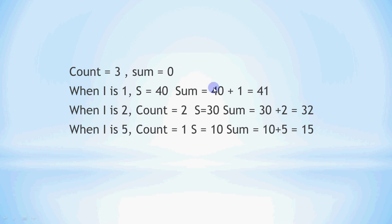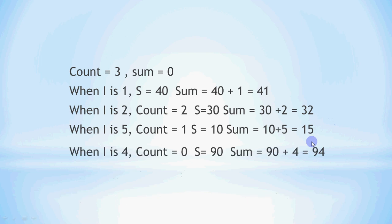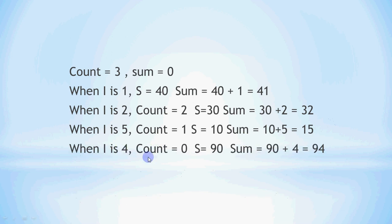In the third iteration, i is 5 and count decreases to 1, so we fetch str[1] which is '10'. Float('10') plus 5 gives 15.0. In the fourth iteration, count is 0 and i is 4, so we fetch str[0] which is '90'. Float('90') plus 4 gives 94.0.